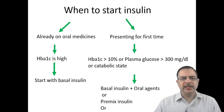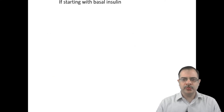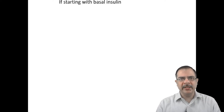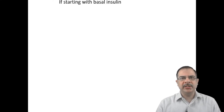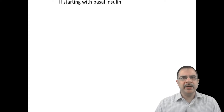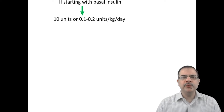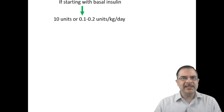Starting with basal insulin: when the patient comes to us for the first time or after oral hypoglycemic agent failure, the patient may have inhibitions about insulin, so it is best to convince the patient and start with once-a-day insulin for convenience. Start basal insulin therapy — which works for almost 24 hours — at 10 units, or 0.1 to 0.2 units per kg per day.